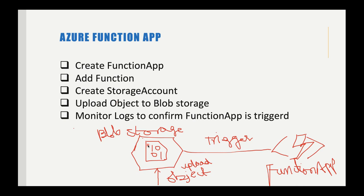It is based on consumption — that is another advantage of the Function App. We don't need to deploy a server and we don't worry about infrastructure. In this video we are going to do a hands-on lab: we will create a Function App, add a simple function, create a storage account and container, upload a file to that blob storage container, and finally monitor the logs in the Function App to confirm it triggers when we place a file.